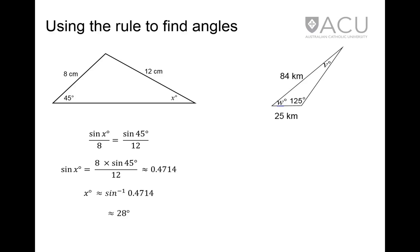In this example, angle V degrees will be calculated first, since the side length opposite is known. The equation becomes sin V degrees over 25 equals sin 125 degrees over 84. Rearranging this equation yields a value for sin of V degrees of 0.1258 to four decimal places. This gives a value for angle V of approximately 7 degrees. This in turn gives a value for angle W of about 48 degrees.